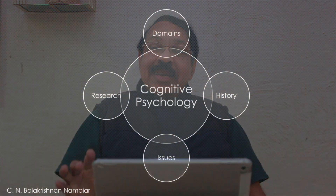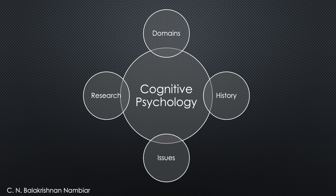In our unit here, you have to see four or five major aspects. The first one is the domains of cognitive psychology. The second aspect is the history of the development of cognitive psychology. The third is the major issues in cognitive psychology. And the fourth is the research methods and issues in cognitive psychology. So we'll start one by one within the constraints of time.